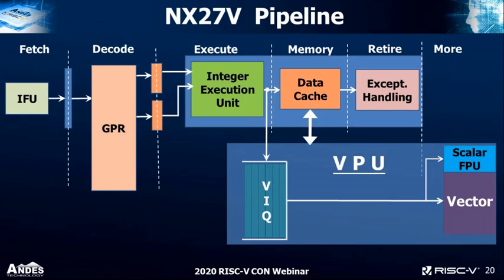Here is the pipeline of the processor. There are five stages — a basic scalar processor. Once vector instructions reach the instruction execution unit, they get dispatched to our vector instruction queue, and our vector processor takes over, executing those instructions to completion, whether scalar FPU operations or vector integer and FPU operations.